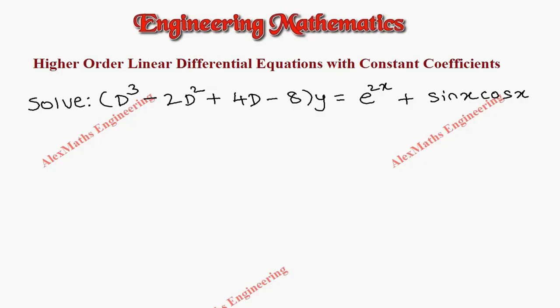Hi students, this is Alex here. In this video we are going to solve a problem where the question is: d cubed minus 2d squared plus 4d minus 8 into y equals e power 2x plus sin x cos x.